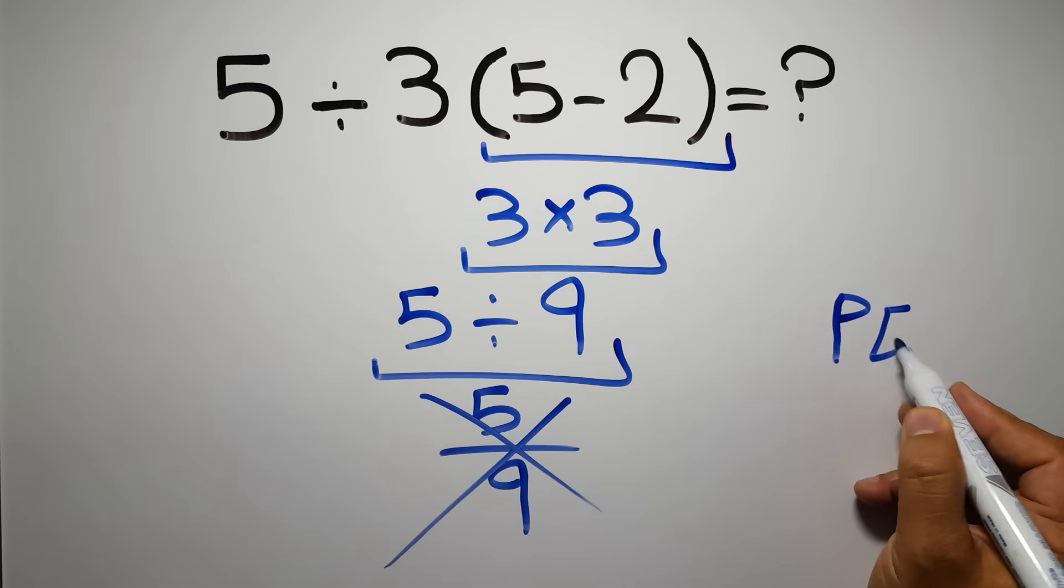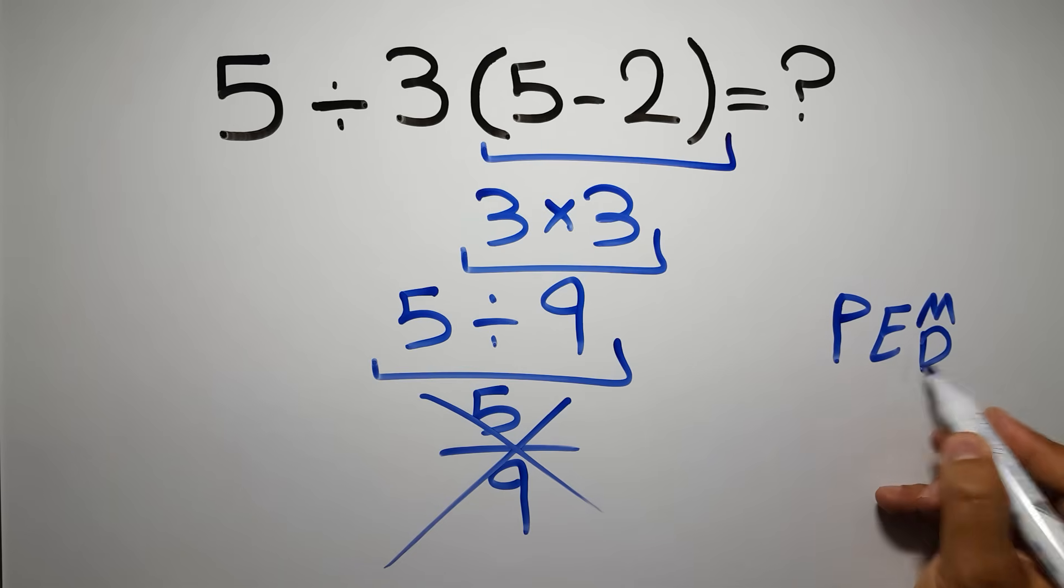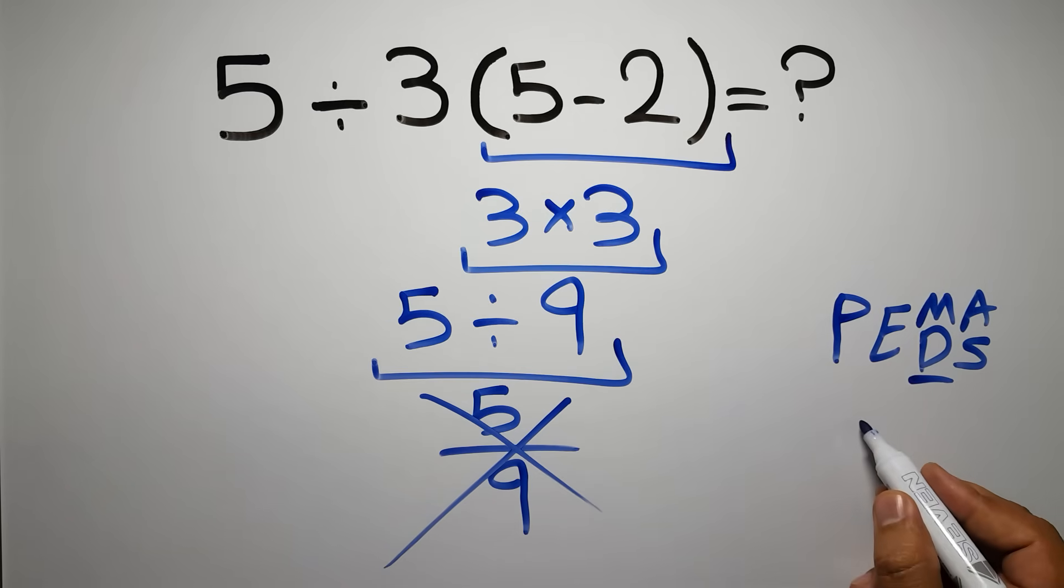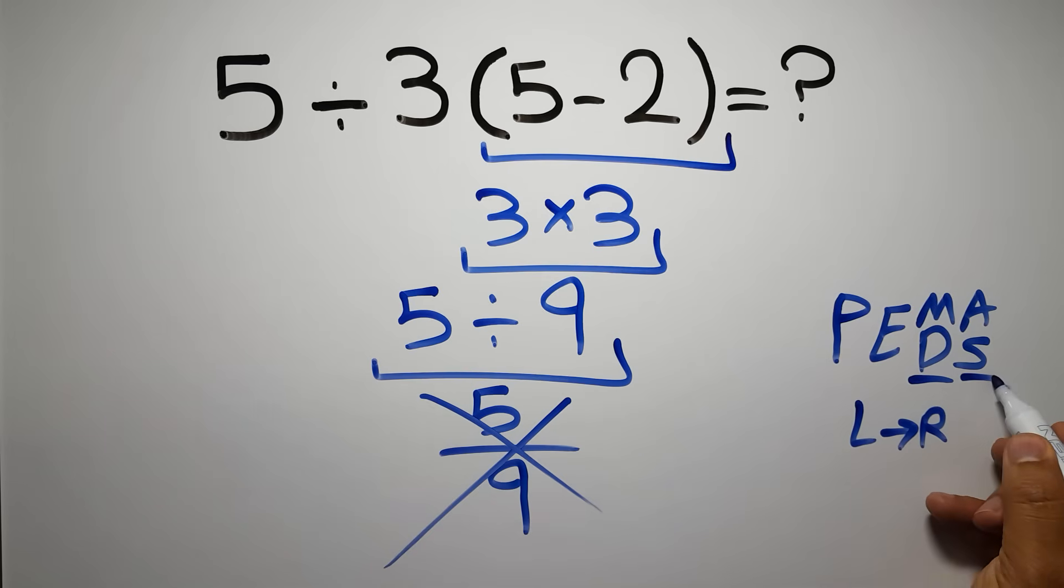do parentheses, then exponents, then multiplication or division, and finally addition or subtraction. Remember that multiplication and division have equal priority and we have to work from left to right. The same applies to addition and subtraction.